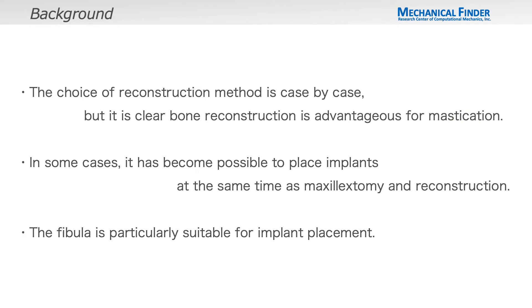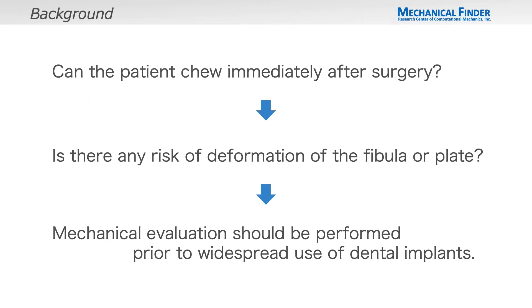The choice of reconstruction method is on a case-by-case basis, but it is clear that bone reconstruction is advantageous for mastication. In some cases, it has become possible to place implants at the same time as reconstruction. The fibula is said to be particularly suitable for implant placement. However, the risk of fibula and plate deformation due to normal mastication has not been well evaluated, so mechanical evaluation is necessary prior to the widespread use of dental implants.